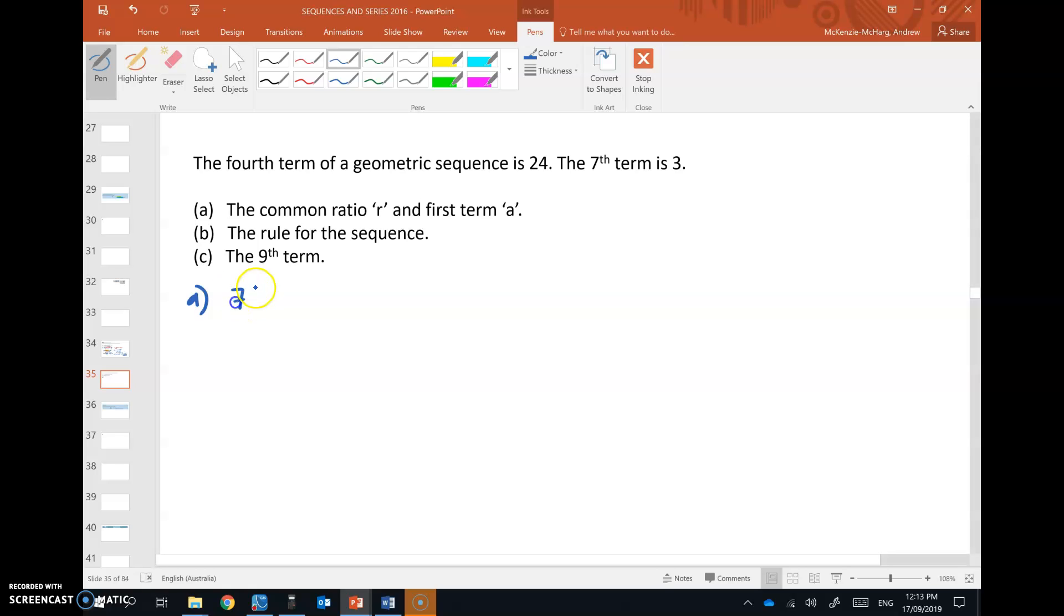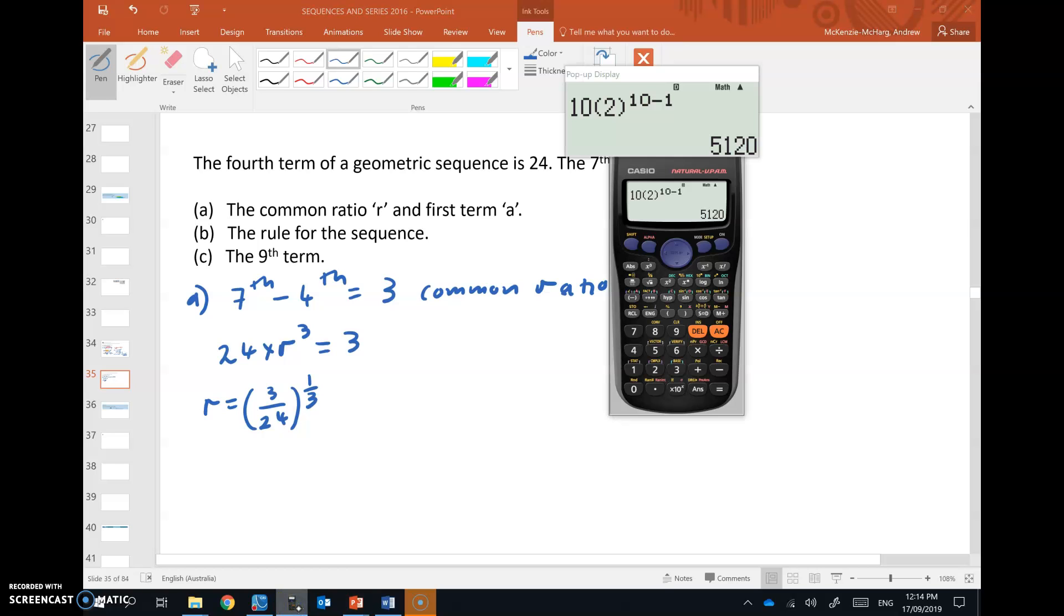We've got the seventh term and the fourth term. So that's three common ratios. So that means that if we take 24 and multiply it by three common ratios, we get 3. So r is equal to 3 over 24 to the power of 1 third or the cube root of 3 over 24. So 3 over 24 to the power of 1 third is 0.5.